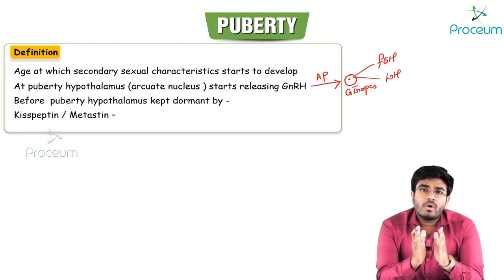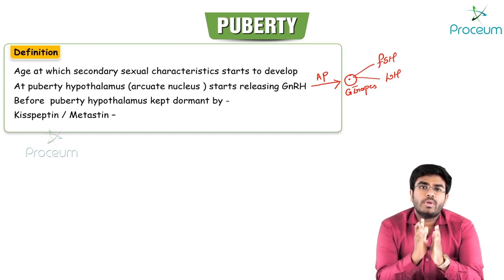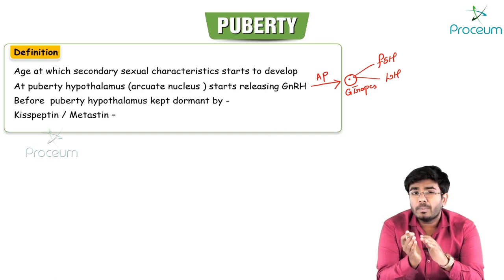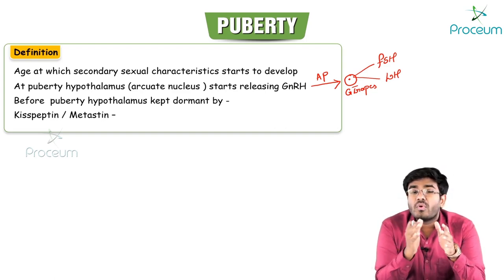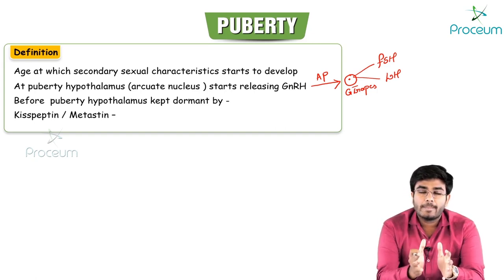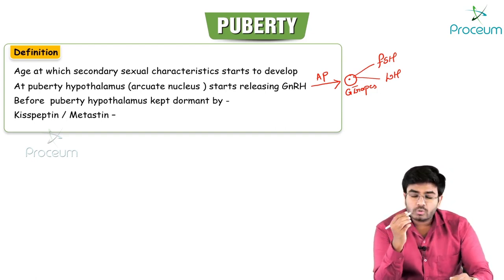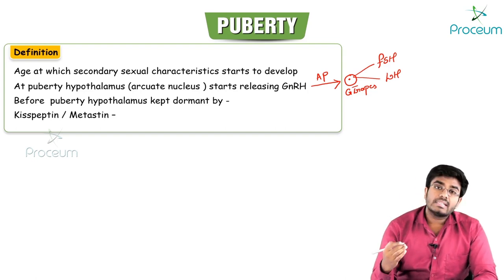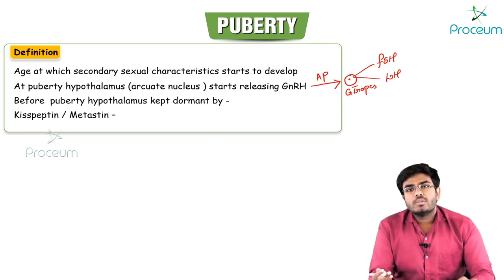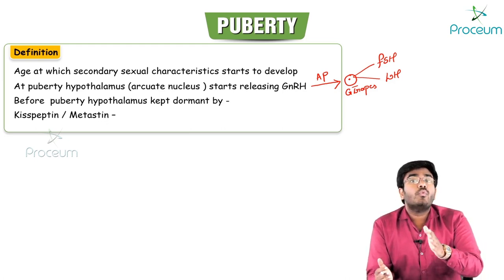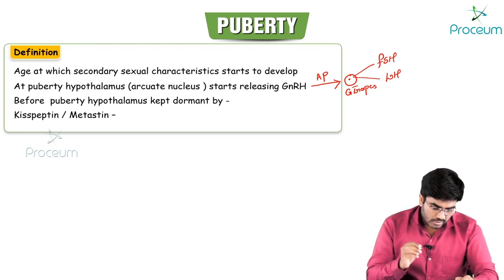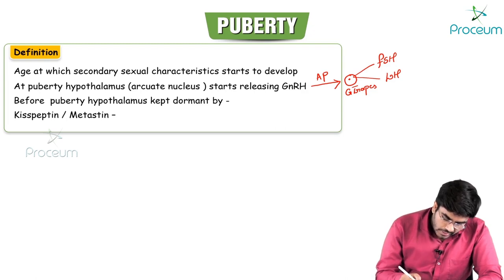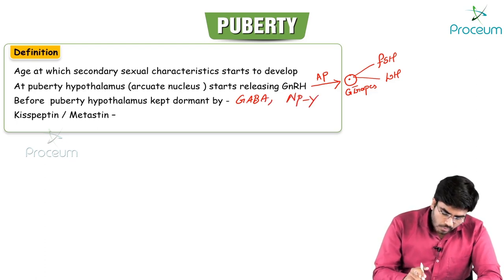Before puberty, the hypothalamus is kept dormant. It is not releasing any hormones. Why is it in an inactive state? It is because of certain neurotransmitters — GABA and neuropeptide Y. These neurotransmitters before puberty will keep the hypothalamus inactive so that it is not producing GnRH.